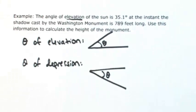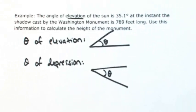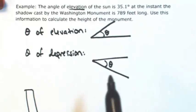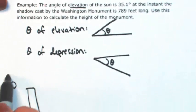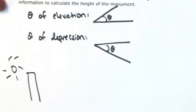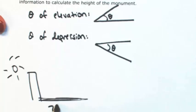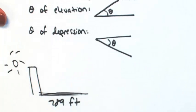So we have an angle of elevation of the sun. So let's have our Washington Monument. I have no artist by any means here, so let's say that's the Washington Monument. So then the sun is behind it, so it's casting a shadow. That's 789 feet long.